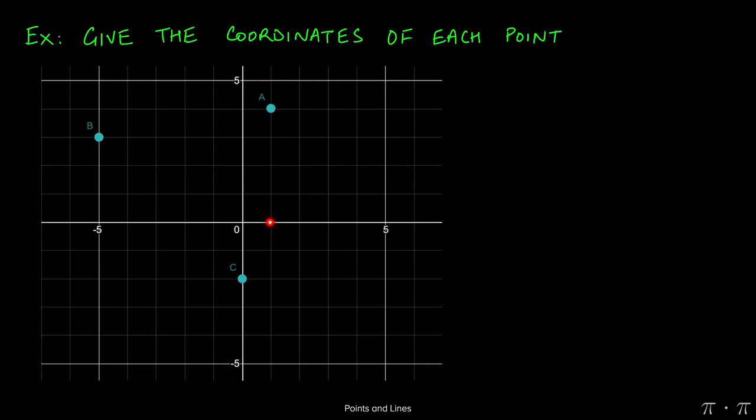This is why we say that the coordinates for A are (1, 4) because we had to go one on the x-axis and four units up on the y-axis. Notice that the x-coordinate always comes before the y-coordinate.